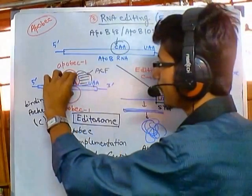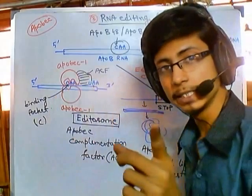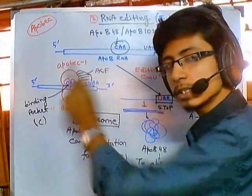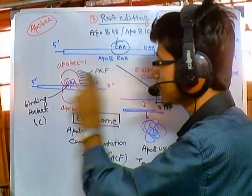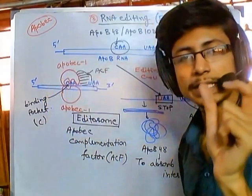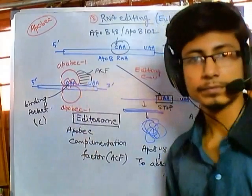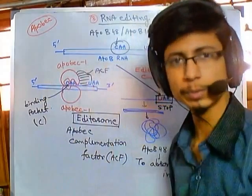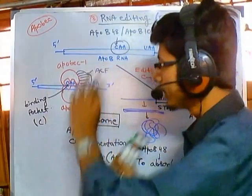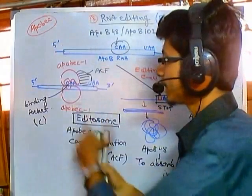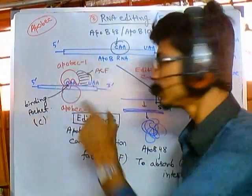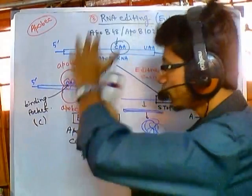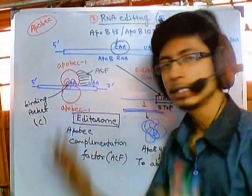The APOBEC dimers bind to the sequence to be edited, and the complementation factor always binds to the downstream or flanking region of this editing sequence. The distance between the ACF binding region and the APOBEC binding region is called the linker region. The region where APOBEC usually binds is called the modulator region. APOBEC binds in such a way that it produces a binding clip where C is entrapped so it can modify C, and ACF is attached downstream of this sequence. Then the editing is done, the editosome complex dissociates, and we get the modified RNA.